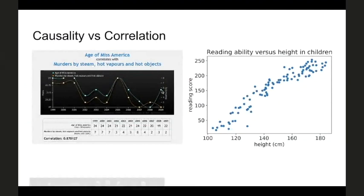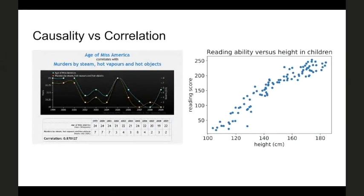Probably everyone here has heard the statement 'causation is not correlation.' We need to dig into that a little deeper. There are two key ways an observed correlation in data is not going to be causal. In this example on the left, the age of Miss America was closely correlated with the number of murders by steam, hot vapours and hot objects between 1999 and 2009. I'd bet that if we collected that data for 2009 to 2019, that pattern would no longer hold — it's not even a true correlation, it's a spurious artefact found by searching too many pairs of datasets.